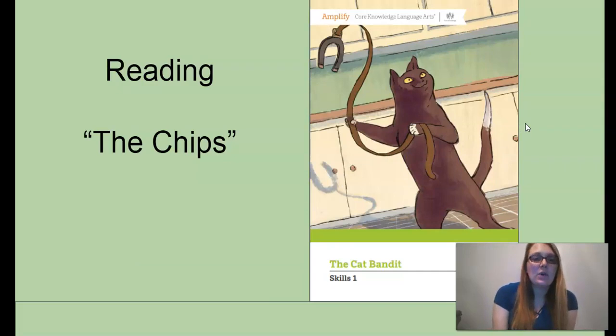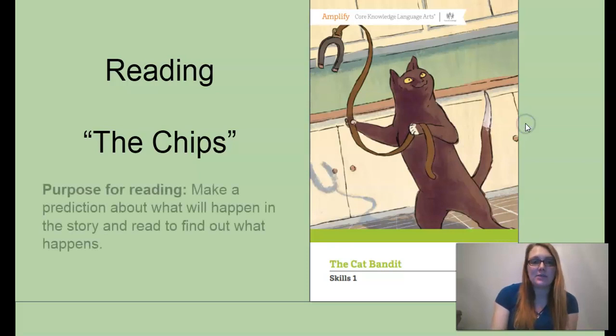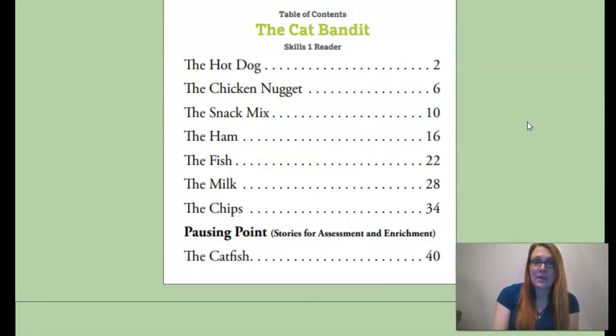All right. Today, we're going to be reading in our Cat Bandit Reader. Once again, this story is called The Chips. Our purpose for reading is to make a prediction about what will happen in the story, and then read to find out what does happen. We'll see in our Table of Contents, The Chips is on page 34.